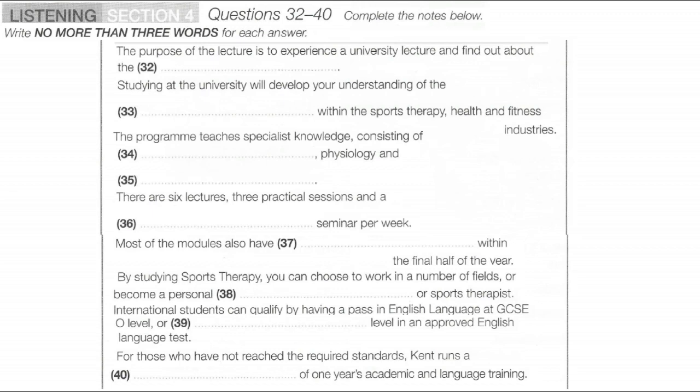International students can qualify with the following: school certificates and higher school certificates awarded by a body approved by the university, matriculation from an approved university with a pass in English language at GCSE O level or an equivalent level in an approved English language test, passing one of Kent's foundation programs provided that you meet the subject requirements for the degree course you intend to study, or an examination pass accepted as equivalent to any of the above.